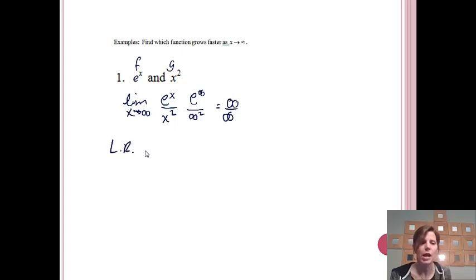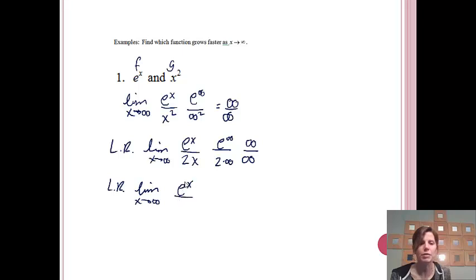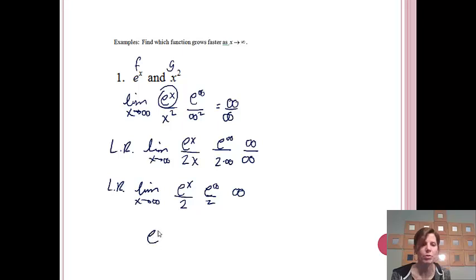Applying L'Hôpital's Rule, I get the limit as x approaches infinity of eˣ over 2x. Plugging in infinity gives e to the infinity over 2 times infinity, which is again infinity over infinity — still indeterminate. Applying L'Hôpital's Rule again, the derivative of eˣ is eˣ and the derivative of 2x is 2, giving the limit of eˣ over 2. Plugging in infinity gives e to the infinity over 2, which equals infinity. Since the answer is infinity, the function on top grows faster: eˣ grows faster than x².